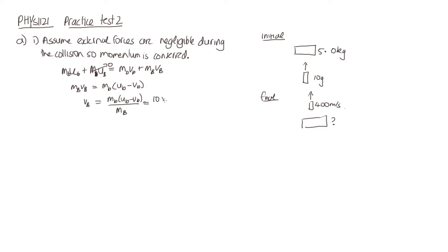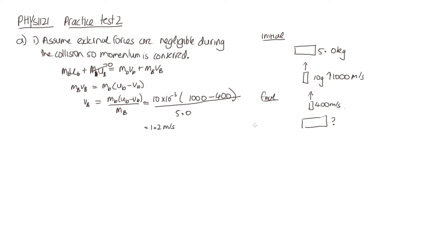The bullet is 10 grams, so that's 10 to the minus 3 kilograms. The initial speed of the bullet, as told in the question, is 1,000 meters per second. So this is 1,000 minus 400, and then we're dividing by the mass of the block which is 5 kilograms. When we solve this, we get 1.2 meters per second, and it's moving upwards because this is positive and we've taken upwards as our positive direction.